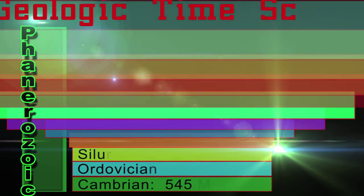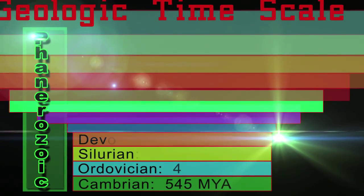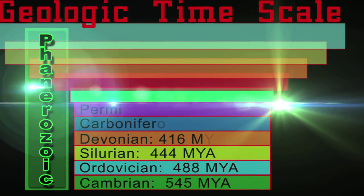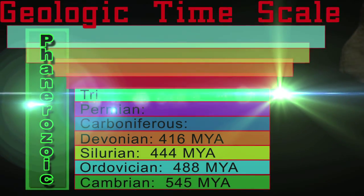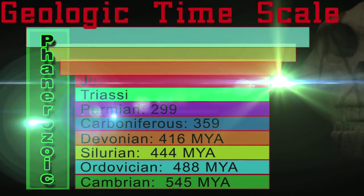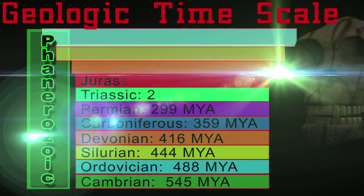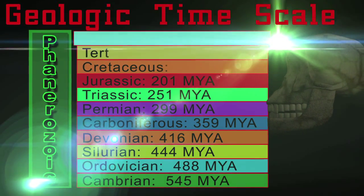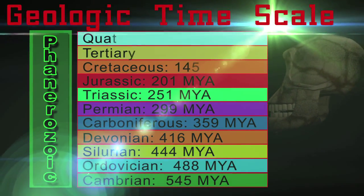The Phanerozoic is divided into 11 periods: the Cambrian, Ordovician, Silurian, Devonian, Carboniferous, Permian, Triassic, Jurassic, Cretaceous, Tertiary, and Quaternary periods.